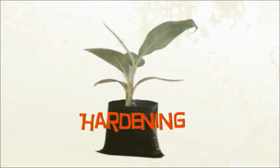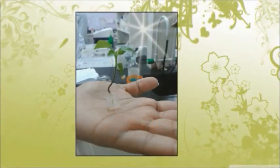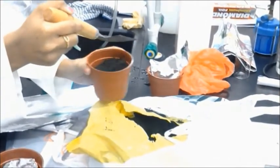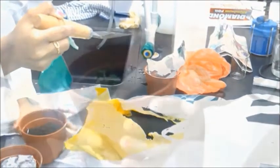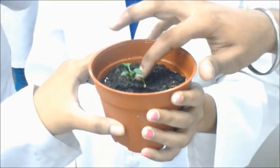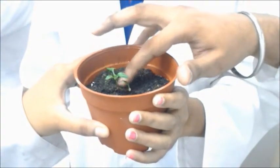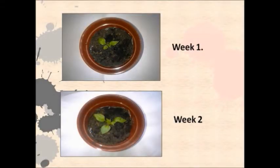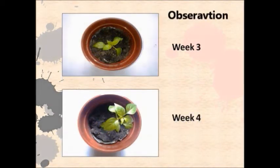The last part of micropropagation is the establishment of plants in soil, also known as hardening. A three-month-old plantlet is carefully removed from the bottle, then cleaned and washed with tap water to ensure all attached media is removed. After that, the plantlet is transferred to a flower pot containing soil. A clear plastic bag is prepared mainly to improve air circulation and maintain 100% humidity for the plant.